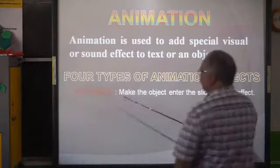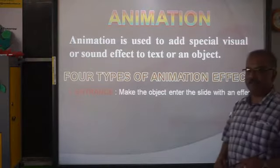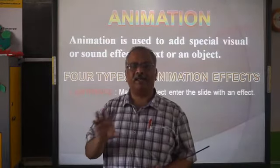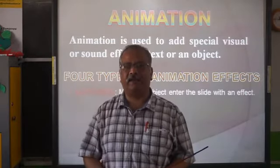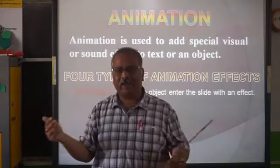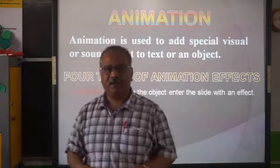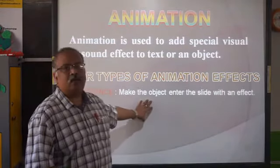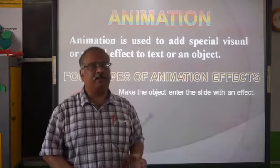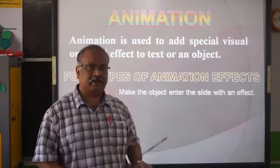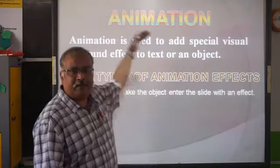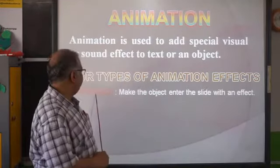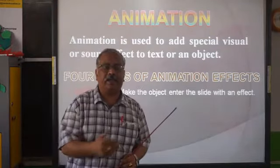Entrance: this makes the object enter the slide with an effect. You watch movies — before the movie, the credits like 'Directed by' and 'Starring' appear on screen. Sometimes they come from up, down, left, right, or spin in. All these things can be done here. Entrance is how you want your object to enter the slide — suppose you have written 'Class 6 Presents,' you choose from which side it comes: right, top, bottom, or any corner.